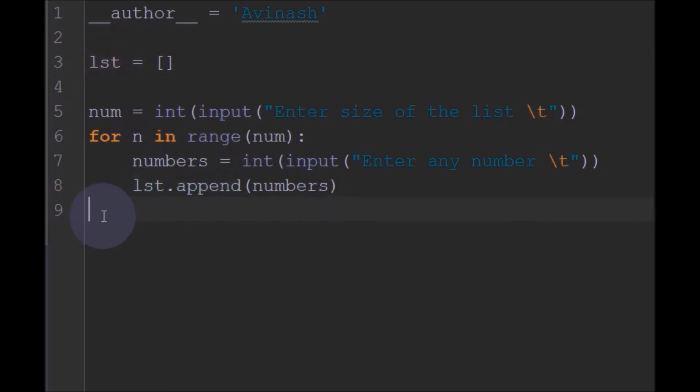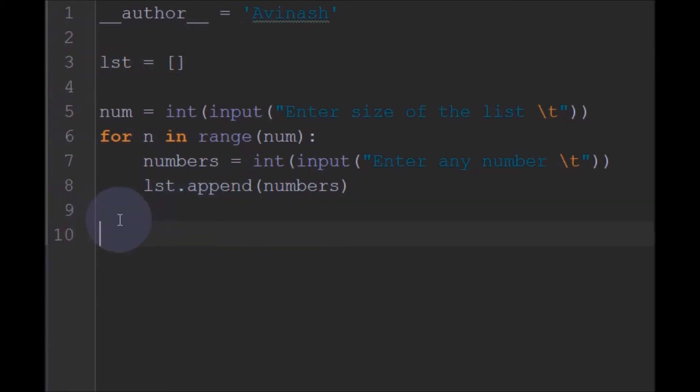So now we can perform this search operation. Linear search. First, basically we will define a boolean variable called found and initially set it to false. So this found boolean variable tells us whether the element is found or not. Initially, I will set it to false. So now I will ask the user to enter which number to be found. So I will give this x equal to, so that this number will be searched in the list whether it is found or not.